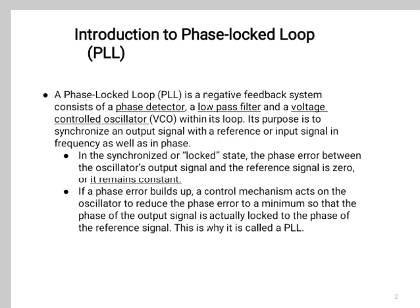The phase lock loop, or PLL, is a control system that generates an output signal whose phase is related to the phase of an input signal. The simplest is an electronic circuit consisting of a variable frequency oscillator and a phase detector in a feedback loop. The oscillator generates a periodic signal, and the phase detector compares the phase of that signal with the phase of the input periodic signal, adjusting the oscillator to keep the phases matched. Keeping the input and output phase in lock step also implies keeping the input and output frequencies the same.